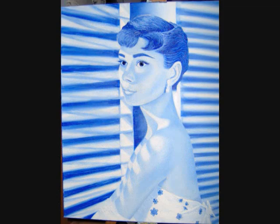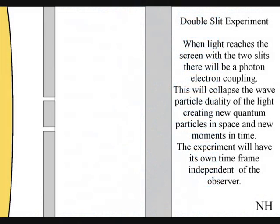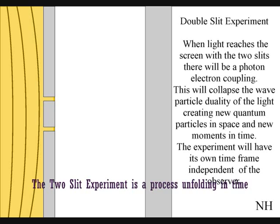The only way to see this happen directly by light is in the two-slit experiment. When the waves reach the screen with the two slits, they will react with the electrons of the screen. This will collapse the wave-particle duality of the light, creating new quantum particles in space, and new moments in time.